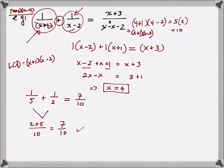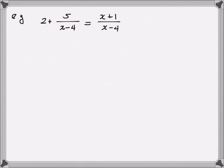I'm going to give you one more example for extra practice here. I have 2 plus 5 over x minus 4 equals x plus 1 divided by x minus 4 here. Again, pause for a minute or so and do this, then come back for answers.